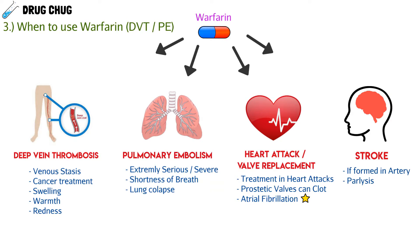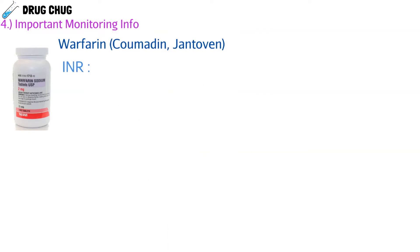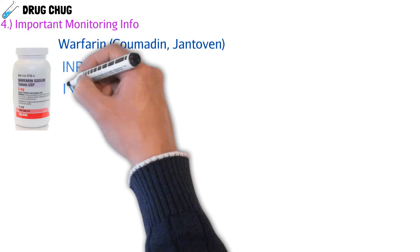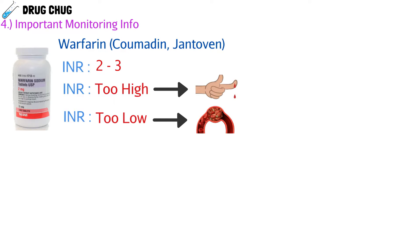Here's some high-yield monitoring information. Warfarin was first used as a rat poison, then approved as a drug in 1954 — it's a very old drug. Brand names include Coumadin and Jantoven. We check INR with a target of 2 to 3, or 2.5 to 3.5 for mitral valve patients. If the INR is too high — say 4, 5, or 10 — the patient is at risk for bleeding. If the INR is too low — around 1 — warfarin isn't doing its job and the patient is at risk for clotting.